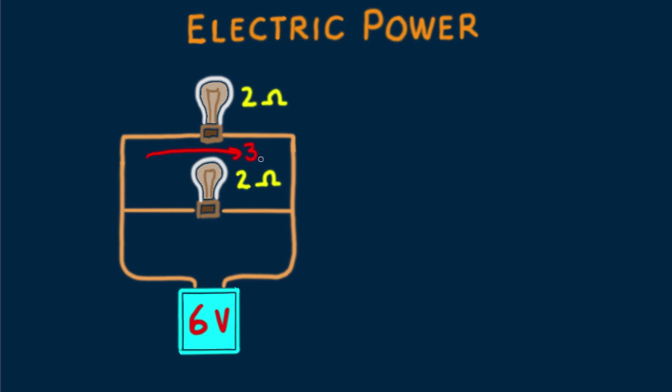How much current? From Ohm's law, six volts divided by two ohms is three amps in each, which means the current drawn by the battery is six amps. And both bulbs glow with the same brightness.